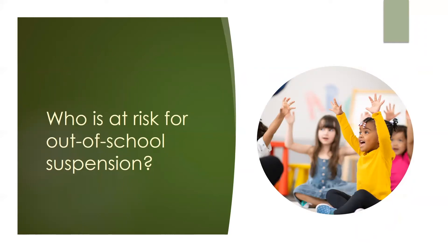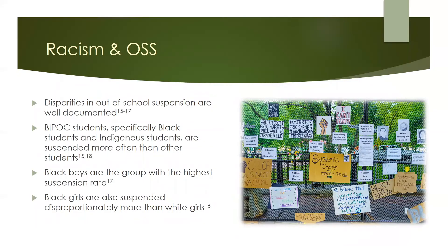Now that we've talked about some of the possible outcomes of out-of-school suspension, we should also talk about what makes students more likely to be at risk for out-of-school suspension and these outcomes as a result. Disparities in school discipline along race or ethnicity have been well documented, including in Minnesota. Several studies have found that these disparities persist even when controlling for other variables, like behavioral severity or number of infractions. BIPOC students, and specifically Black students and Indigenous students, are suspended significantly more often than white students—sometimes several times more often. Black boys are the group with the highest rate of suspension, though it is important to remember that Black girls also experience disproportionality in discipline and are affected by the negative outcomes of suspension as well.